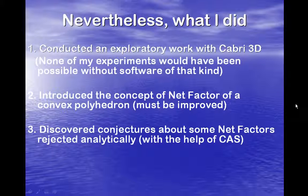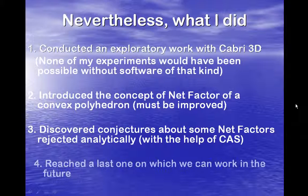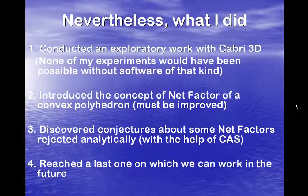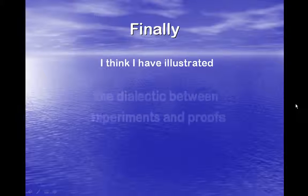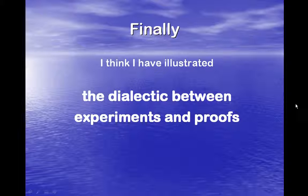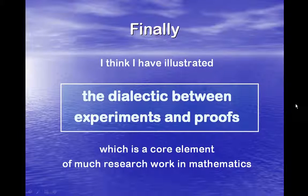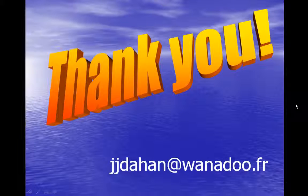I've introduced the concept of net factor of a convex polyhedron. This idea must be improved, but I don't know yet what is the full interest of this net factor. I've discovered some conjectures about these net factors — most of them were rejected analytically with the help of CAS — but I've reached at least one on which we can work in the future. Finally, I think that I have illustrated the dialectic between experiments and proofs, which is a core element of much research work in mathematics. Thank you very much.